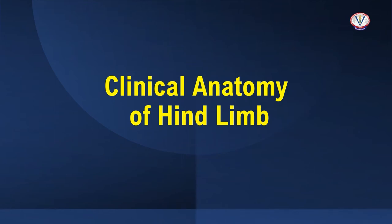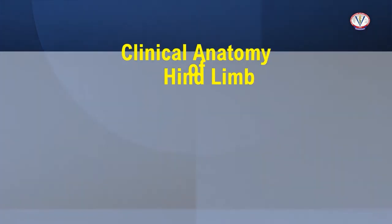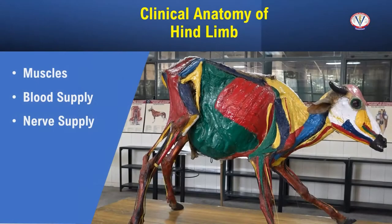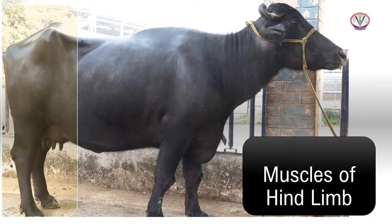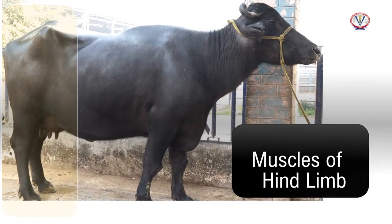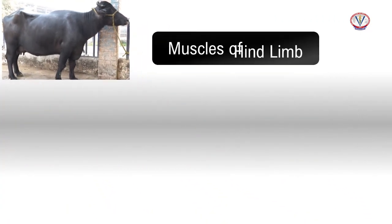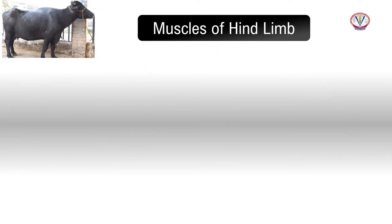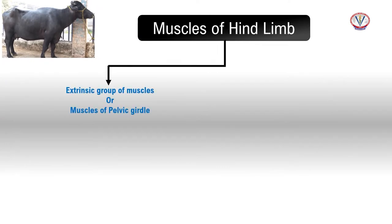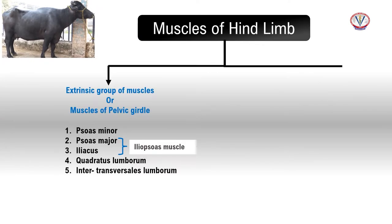Now we'll learn about the clinical anatomy of the hind limb. First we'll learn about the muscles of the pelvic limb. The pelvic limb musculature can be divided into extrinsic or the pelvic girdle muscles and intrinsic muscles.